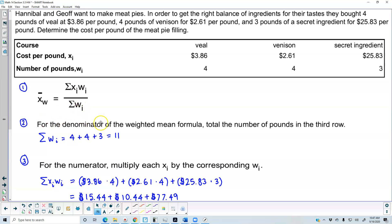For the denominator of the weighted mean formula, we total the number of pounds in the third row. The sum of w_i is 4 + 4 + 3 = 11.